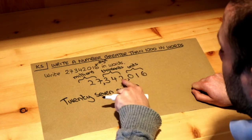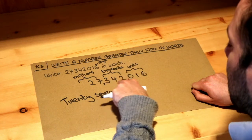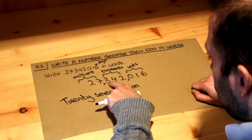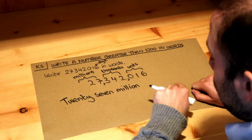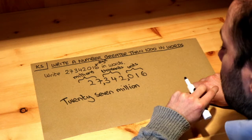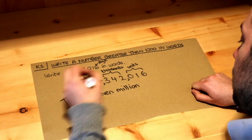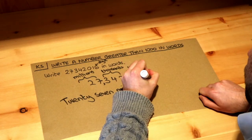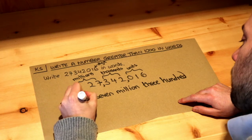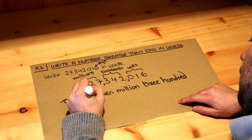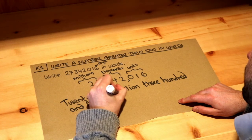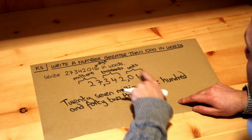Then let's look in the thousands section. How many thousands do we have? Well, this number — 342 — we previously saw that's three hundred and forty-two. So we write: three hundred and forty-two thousand.